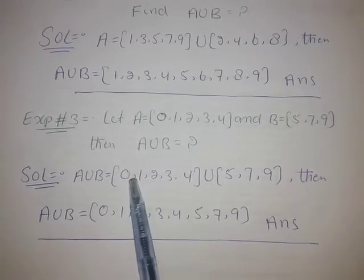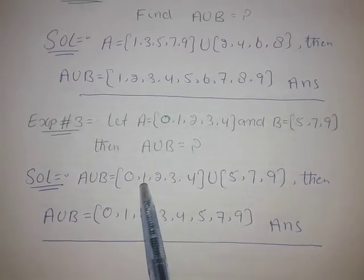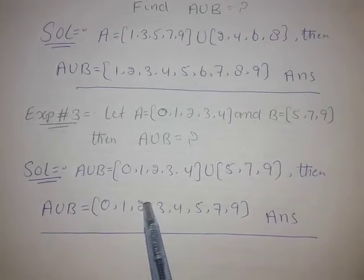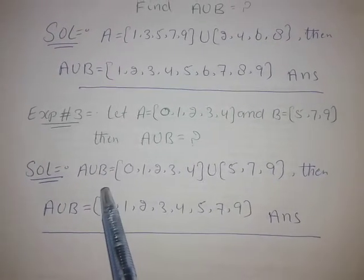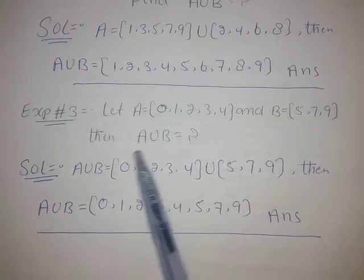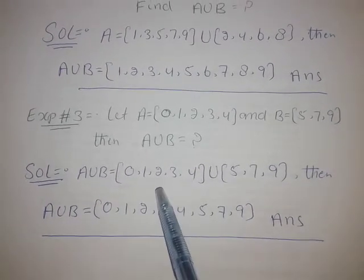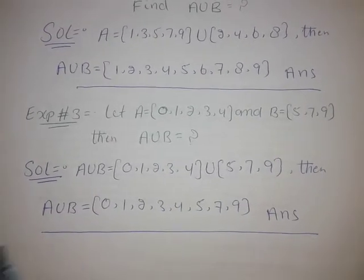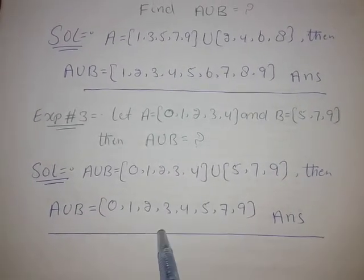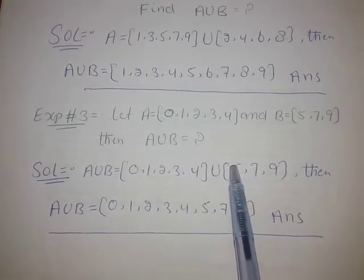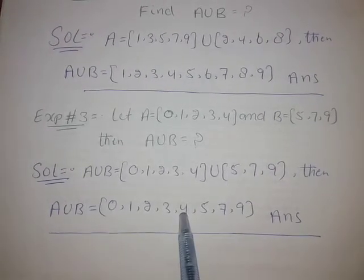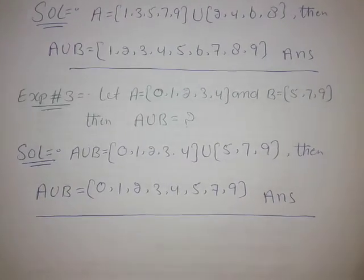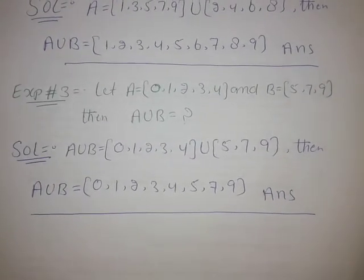The union of A and B is equal to {0, 1, 2, 3, 4, 5, 7, 9}. All elements from both sets are combined, with common elements listed only once. So the union is equal to {0, 1, 2, 3, 4, 5, 7, 9}.